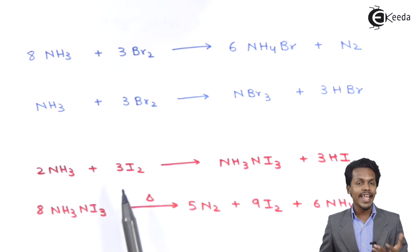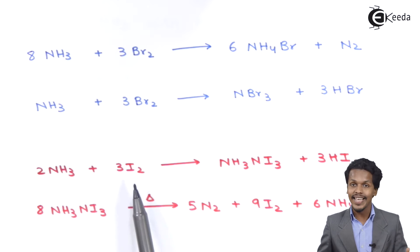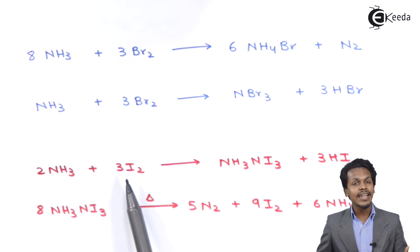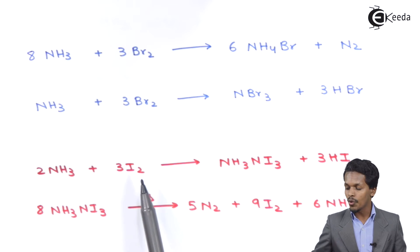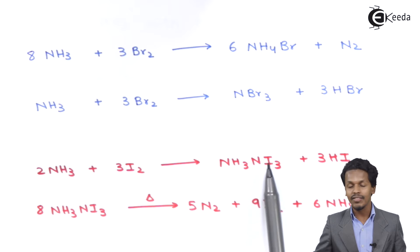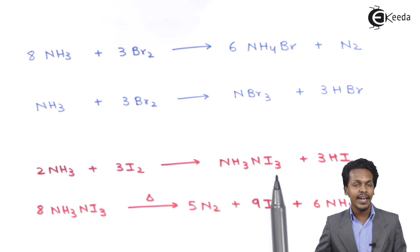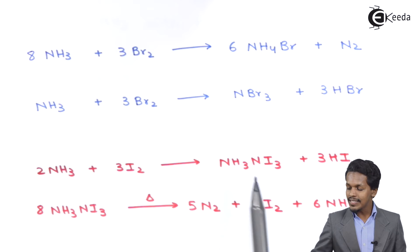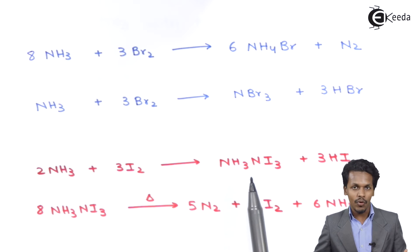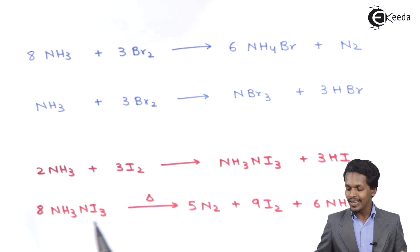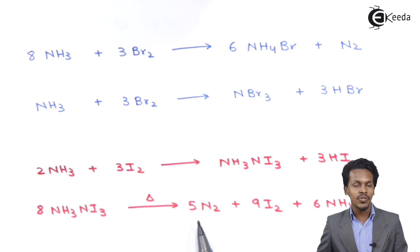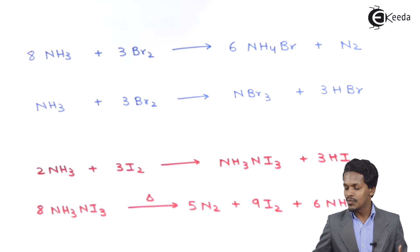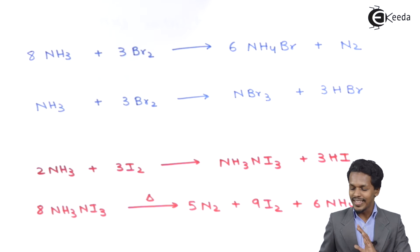Now, the reaction of ammonia with iodine: 2 moles of ammonia react with 3 moles of I₂ to obtain NI₃·NH₃, called Nitrogen Triiodide Ammonia, along with 3 moles of HI. This product is a brown precipitate. Once this brown precipitate is heated and decomposes, it produces 5 moles of N₂, along with 9 moles of I₂ and 6 moles of ammonium iodide.